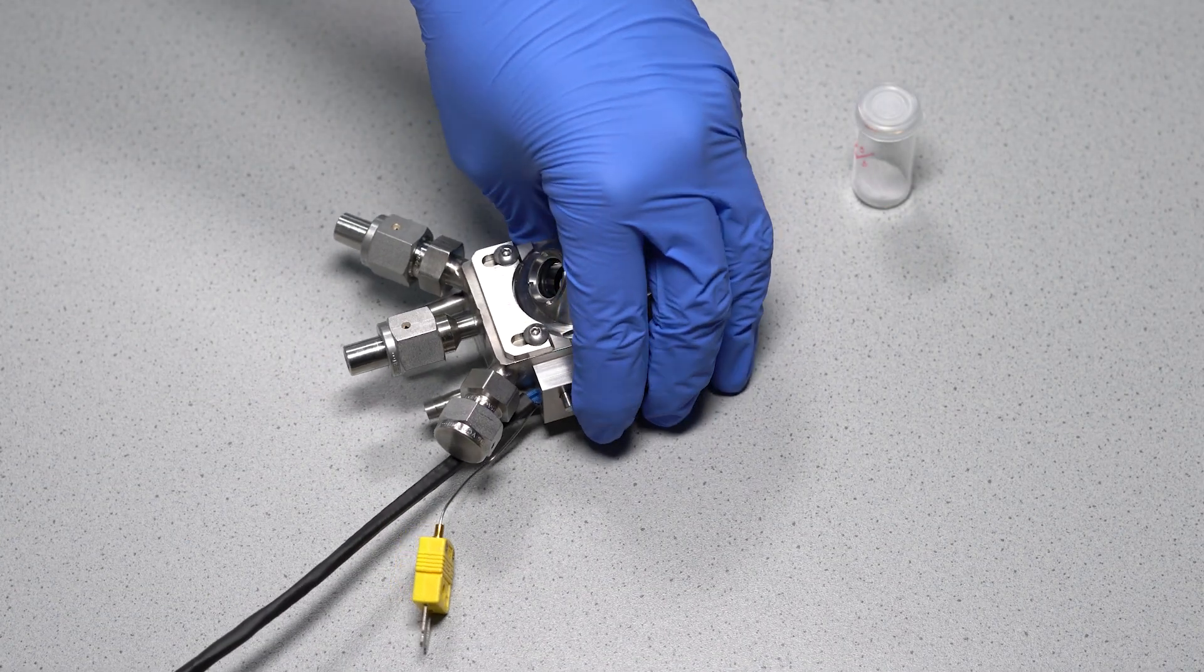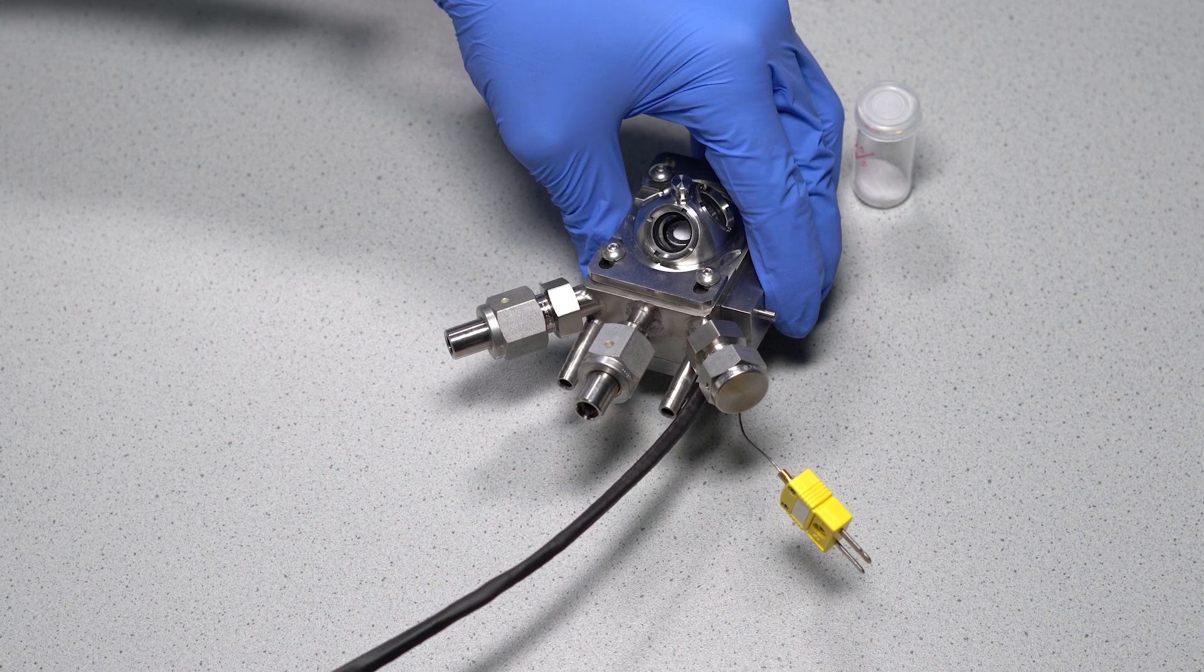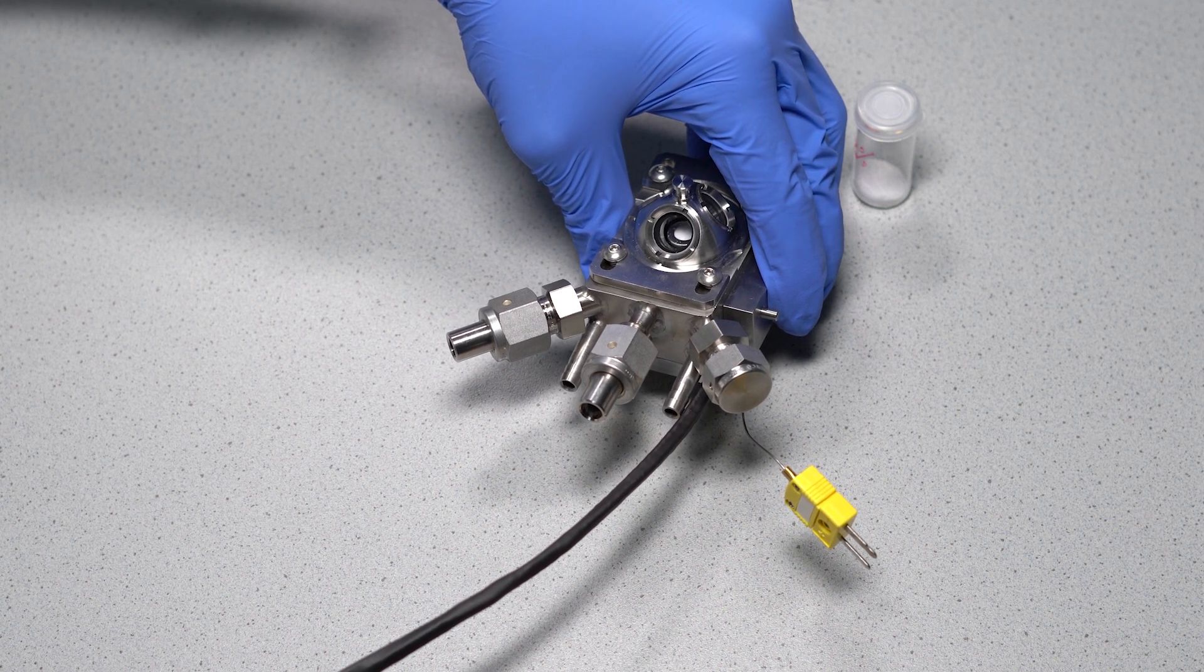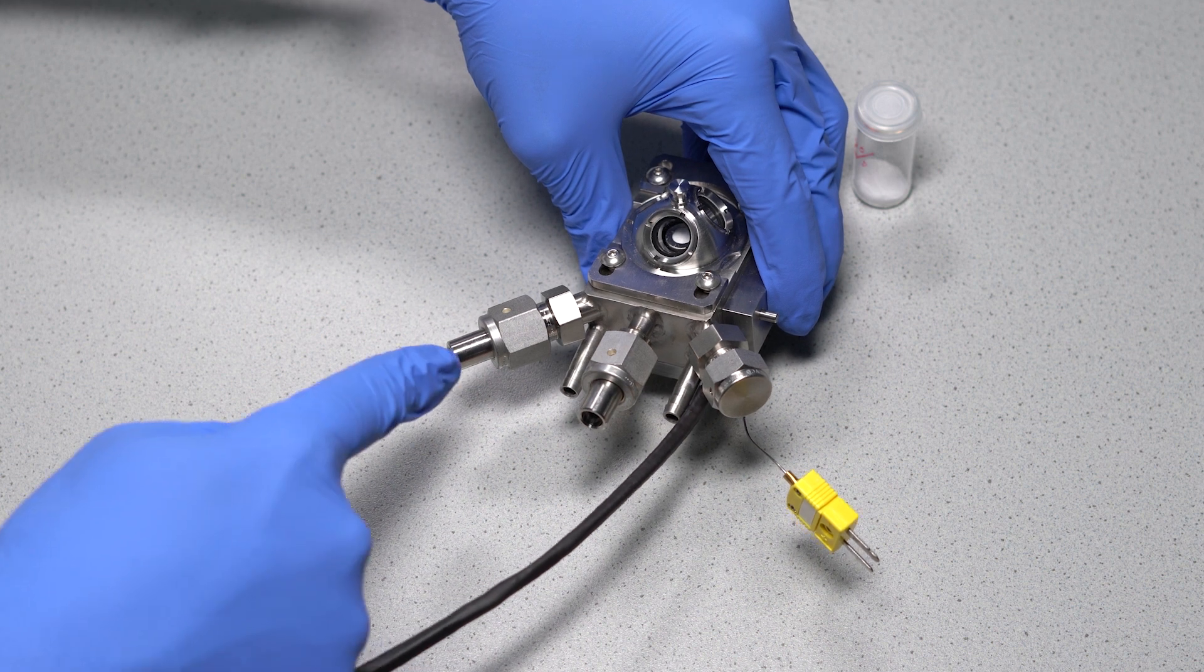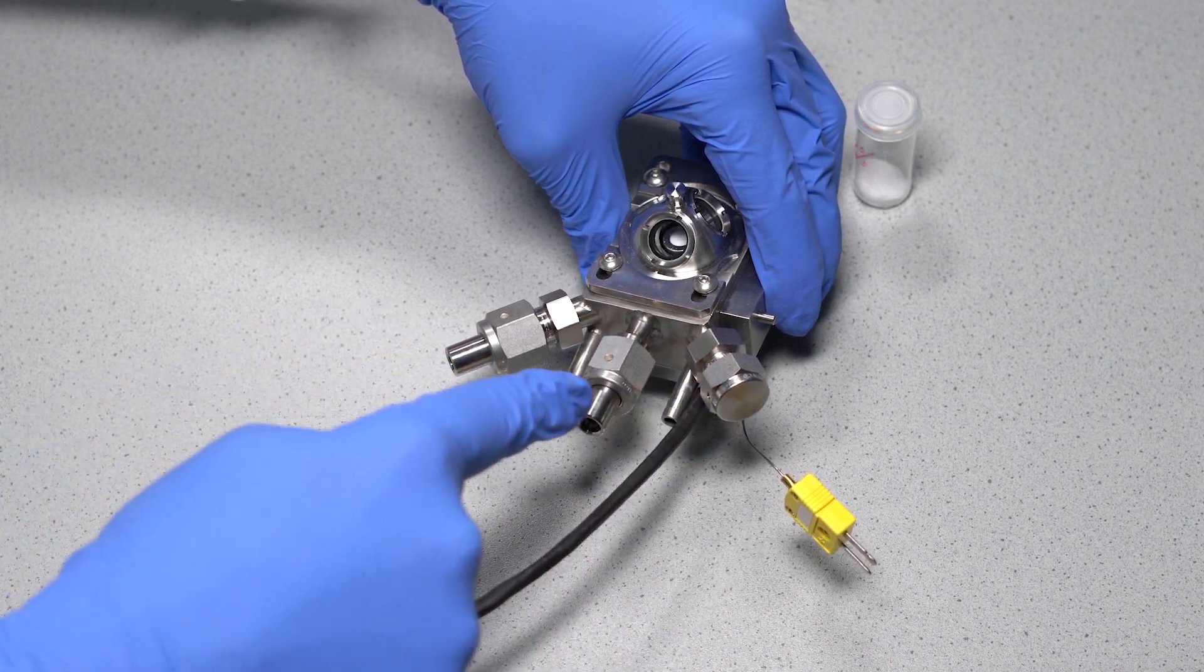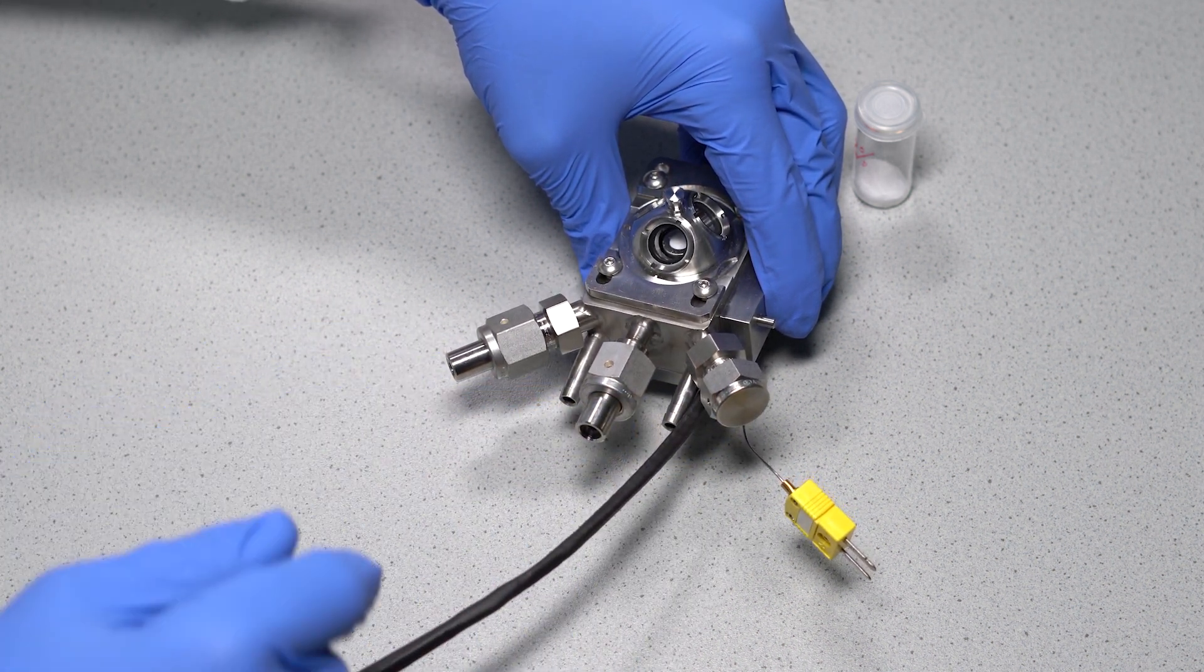If we want to study solid gas reactions, we need to add the reaction gases to the sample. And the Praying Mantis reaction chamber perfectly serves that purpose. These connections are used to supply gas to the sample or evacuate the cell.